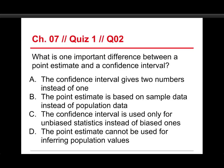Number two, what's one important difference between a point estimate and a confidence interval? The choices here are rather long. The confidence interval gives two numbers instead of one. The point estimate is based on sample data instead of population data. C, the confidence interval is used only for unbiased statistics instead of biased ones. Or D, the point estimate cannot be used for inferring population values.